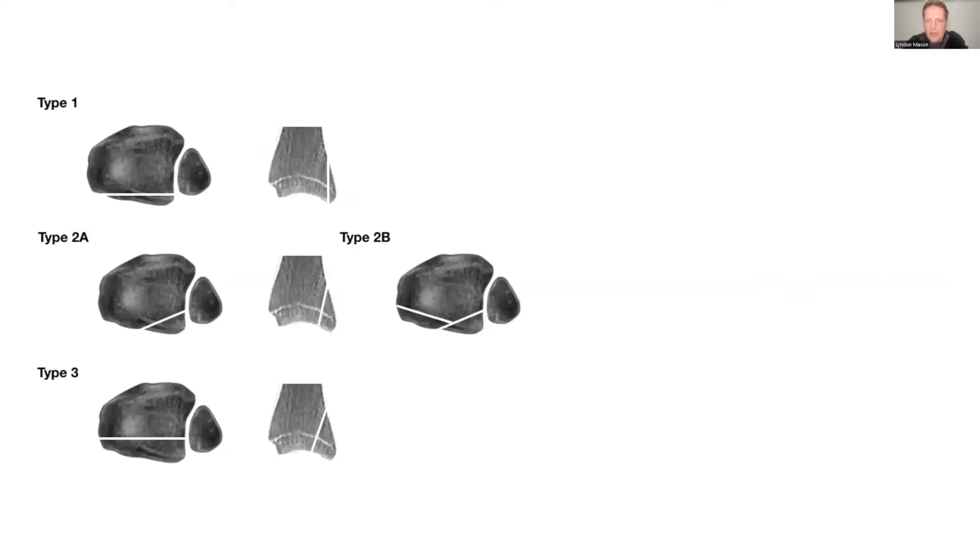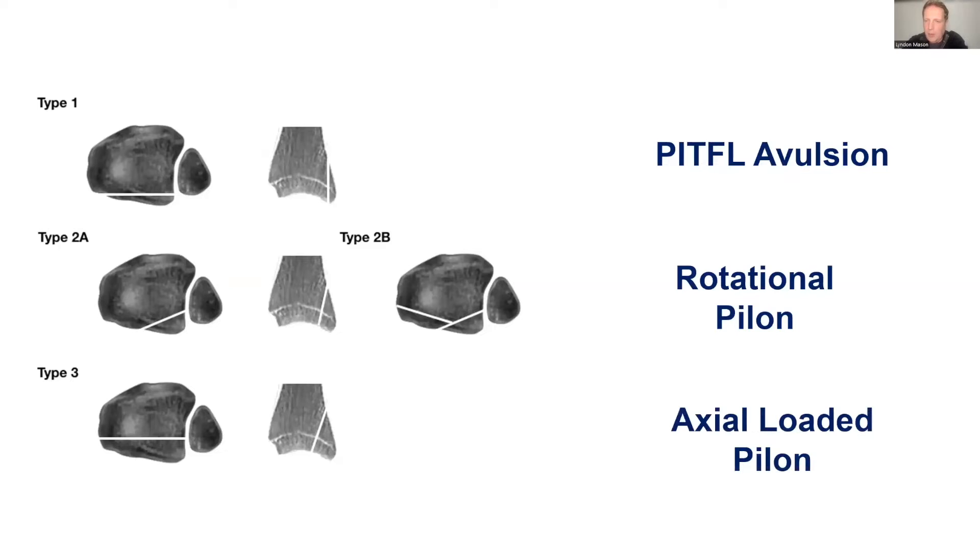This was the classification we came up with. You had your avulsion type injuries, which we termed Type 1s. Your Type 2As and 2Bs were your rotational pilons. We found this very difficult to get out into the literature because we kept putting papers out to journals and journals would just bounce them back saying there's no such thing as a rotational pilon. But a pilon is the tailor's hit in the tibia and it doesn't only have to occur with axial load; it can occur with rotation. Then you have your normal axial loaded pilon, which in the Haraguchi classification was not even included.